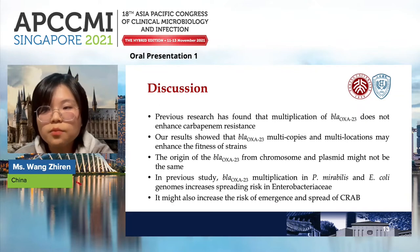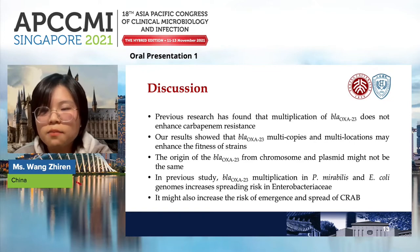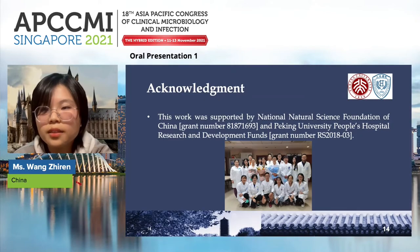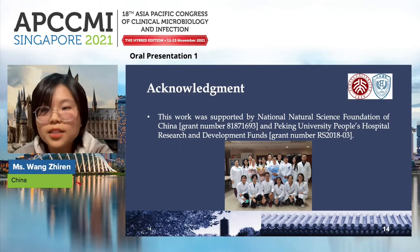Previous research confirmed that BLA-OXA-23 multiplication does not enhance carbapenem resistance. Our results show BLA-OXA-23 co-existent strains are more resistant to stress and form more biofilm, suggesting that multi-copy, multi-location distribution may enhance strain fitness. The different transposon types in 2014 TGA-V1 suggest that the chromosome and plasmid OXA-23 copies may have different origins. We speculate that multiple copies of OXA-23 on both chromosome and plasmid may increase bacterial fitness in the host and environment, potentially increasing the risk of CRAB spread. This work was supported by the National Natural Science Foundation of China and Peking University People's Hospital. Thank you.